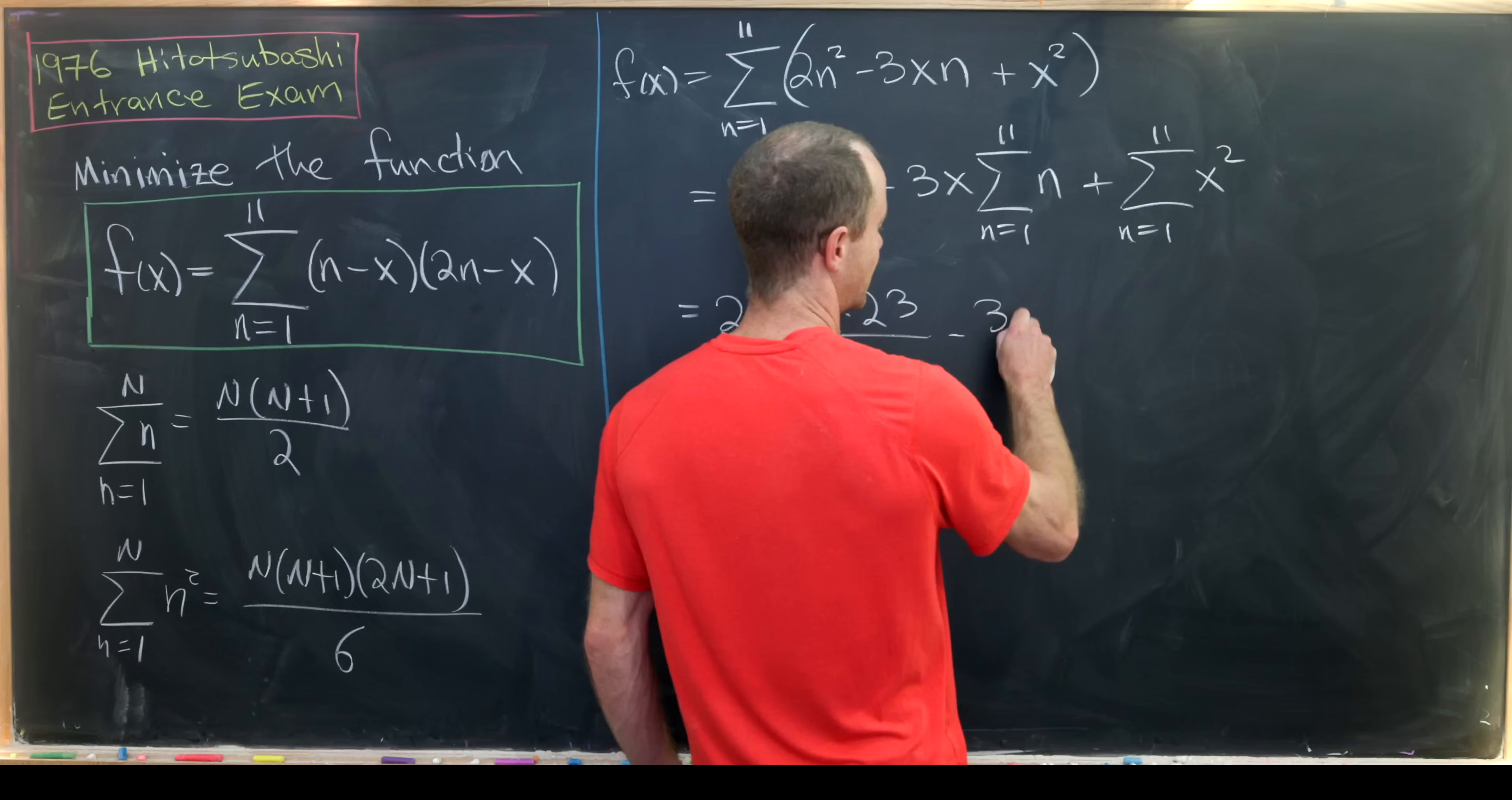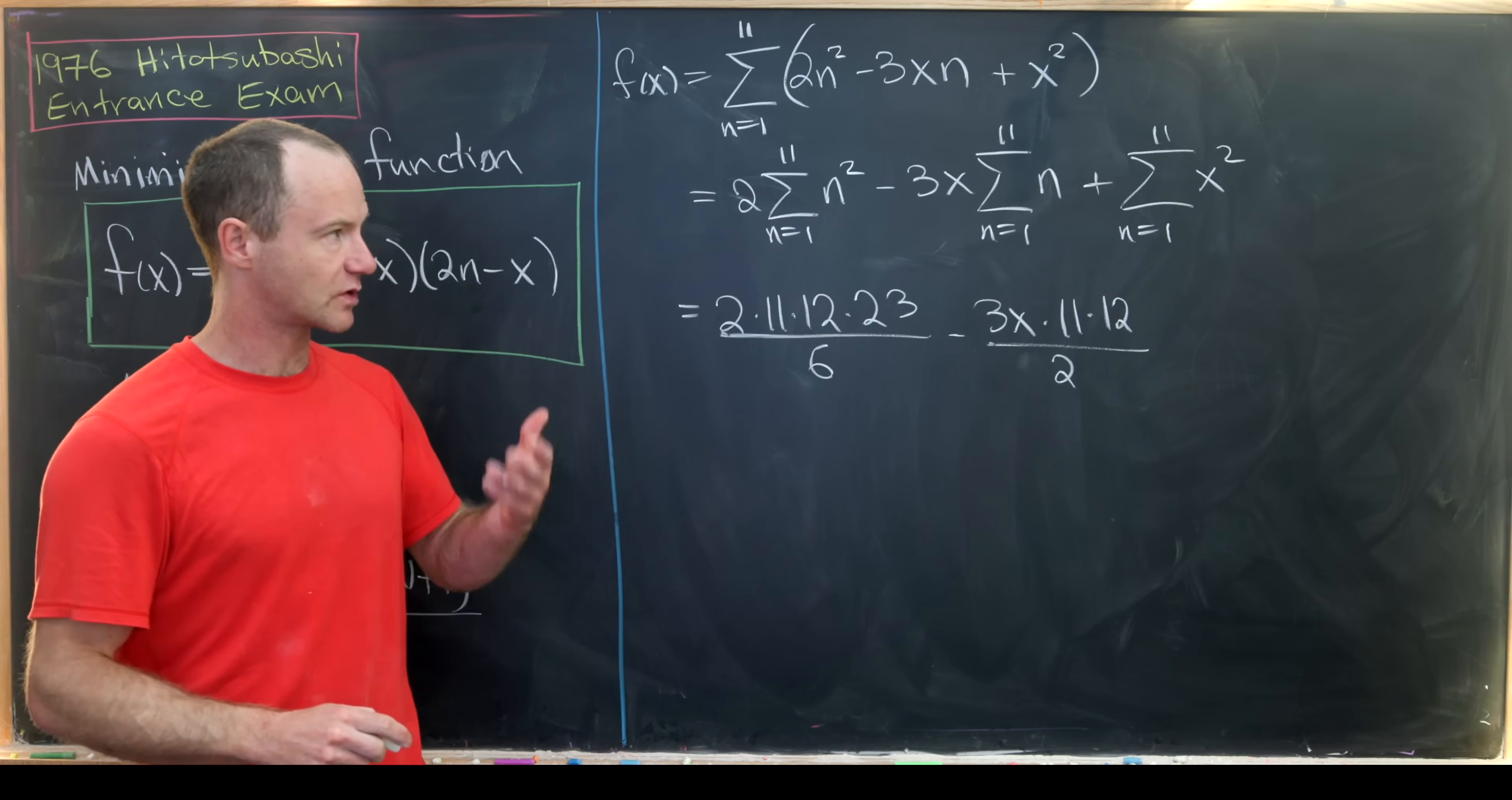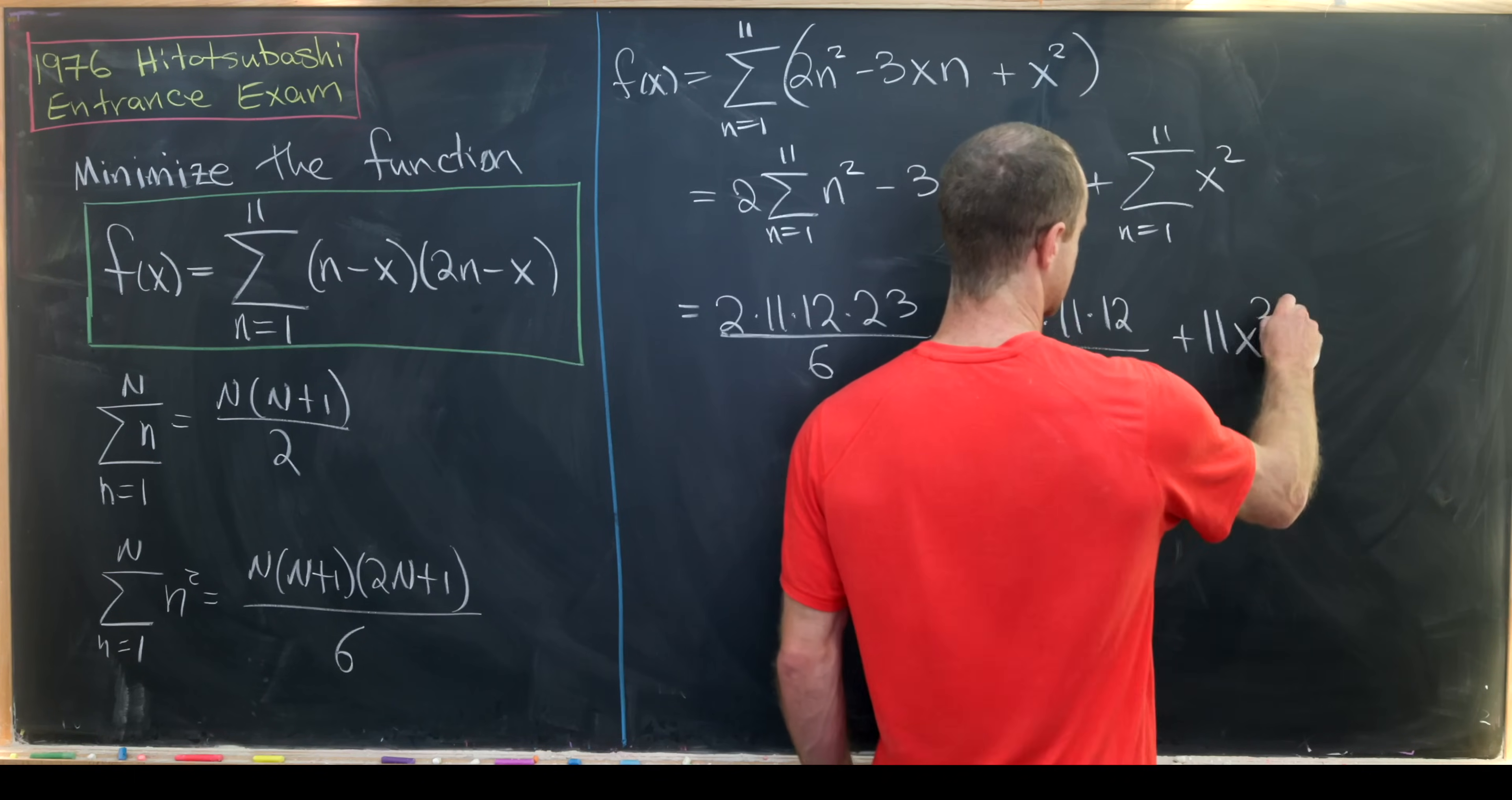And then we'll have minus 3x times 11 times 12 over 2. And for this last term we're really just adding x² to itself 11 times which gives us exactly 11x².